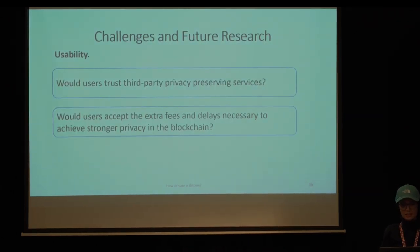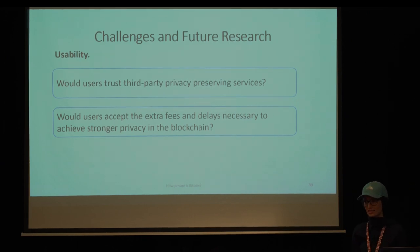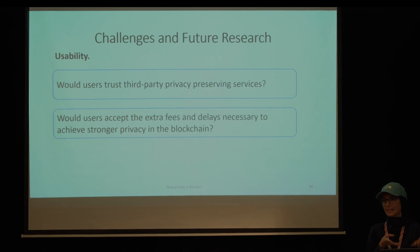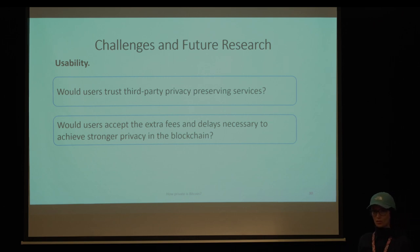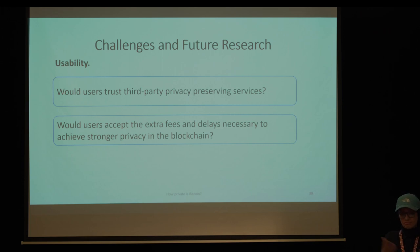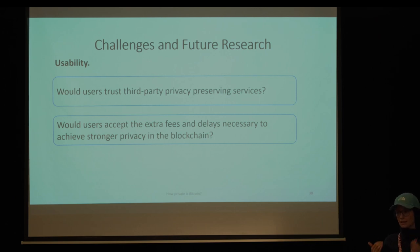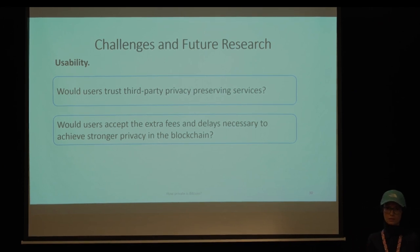Last but not least is usability. If we offer privacy as a layer two solution, we expect users to educate themselves on the complicated features of layer two solutions, wallets, and so on. We should investigate whether users would trust third-party services to enhance their privacy, and whether users would really pay extra fees and delays for their privacy. Future research can shed light on users' understanding of privacy obtained from both layer one and layer two solutions.